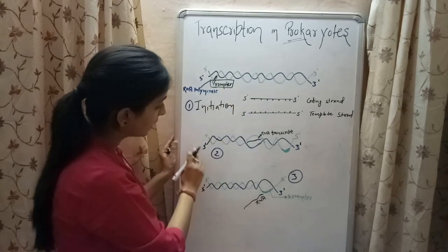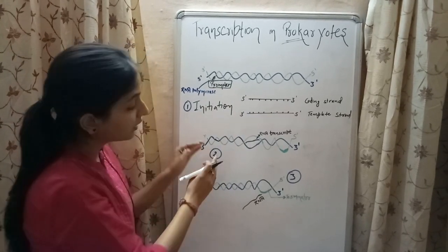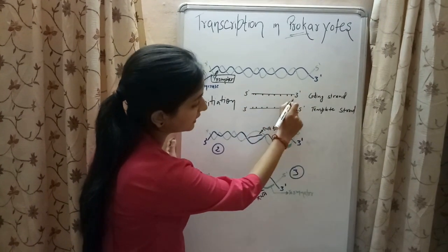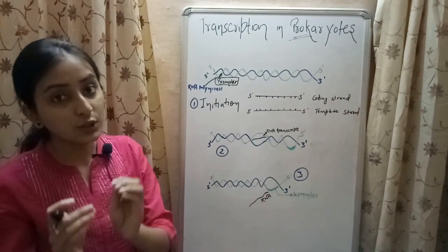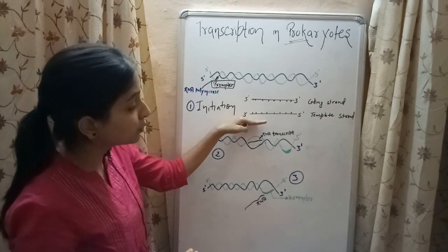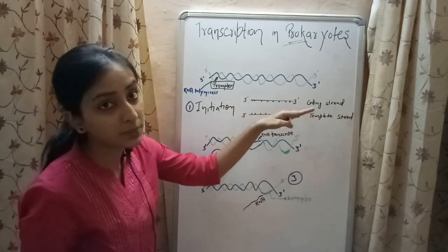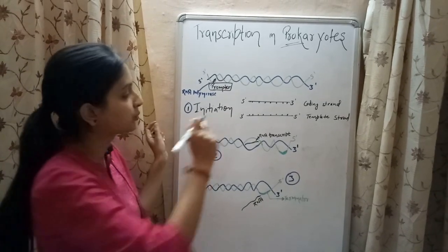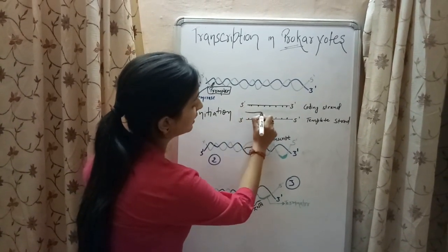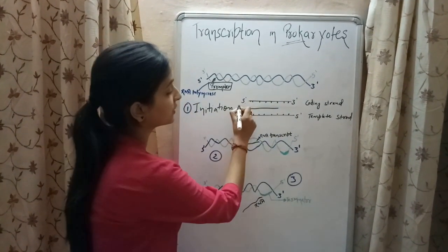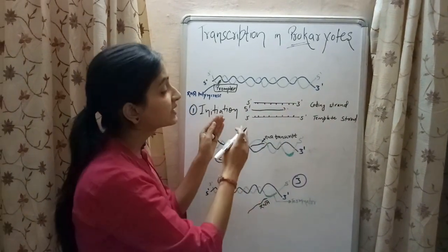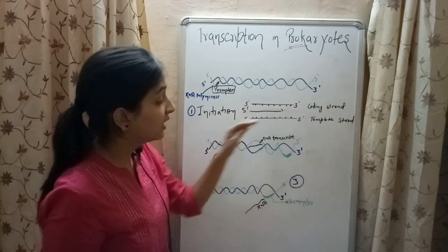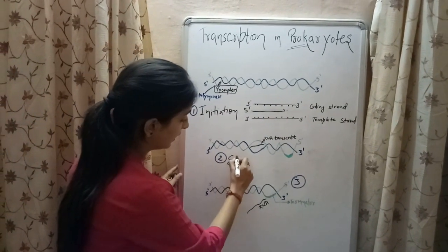This RNA polymerase, once it gets bound to the promoter region, starts synthesizing the RNA transcript in 5' to 3' direction by adding nucleotides which are complementary to the sequences present in the template strand, with the only difference that instead of thymine, uracil is present. So this is your RNA transcript growing in the 5' to 3' direction with sequences complementary to the template strand. This step is known as elongation.